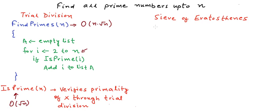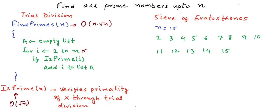If n is 15, we create a list of numbers from 2 to 15 and initially say all of them are prime. We start with the first element in the list, which is 2. If 2 is prime, all the multiples of 2 cannot be prime. So we strike off all the multiples of 2: 4, 6, 8, 10, 12, and 14 are struck off.